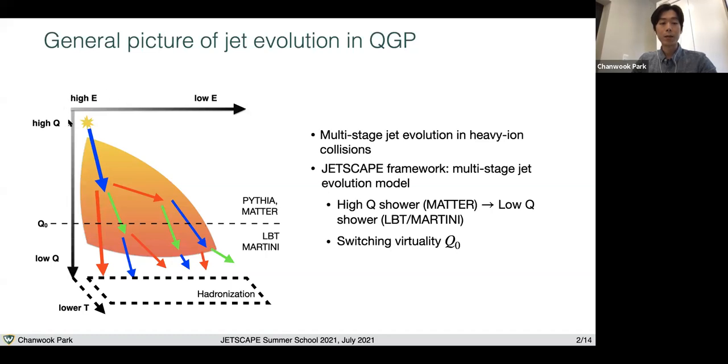At the same time, they evolved from high energy to lower energies. The JETSCAPE framework incorporates this multiple stage jet evolution model, where one can apply Pythia or Matter shower for high virtuality phase and choose LBT or Martini for low virtuality phase. The switching between these two phases is given by this switching virtuality Q0, which is a free parameter.